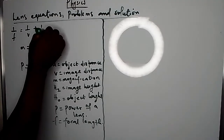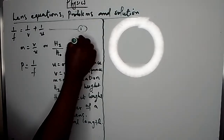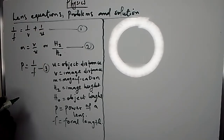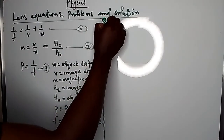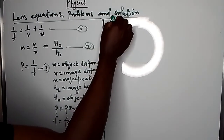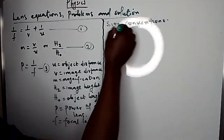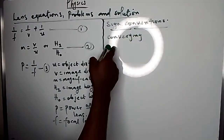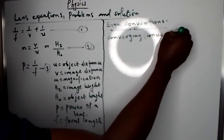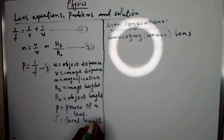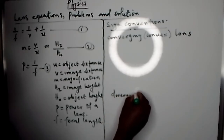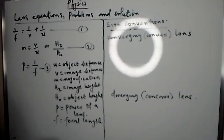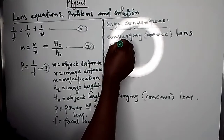Now, these equations — 1, 2, and 3 — have sign conventions attached to them. For lenses, we have a converging lens, which comes from the convex lens, and a diverging lens, or concave lens. For both converging and diverging lenses, the object distance is always positive for a real object, which we come across most often.